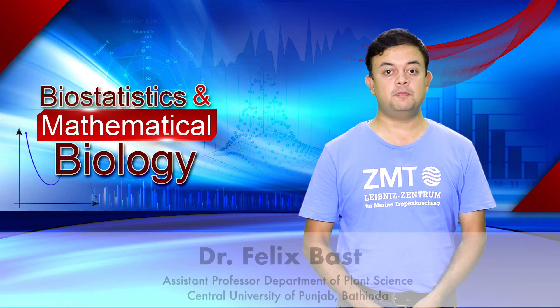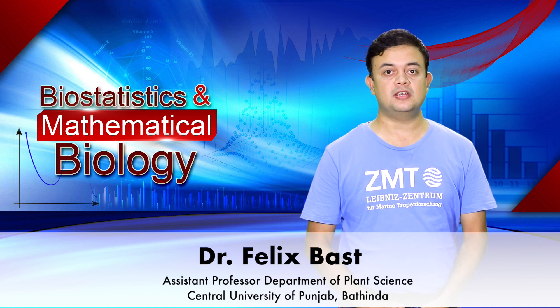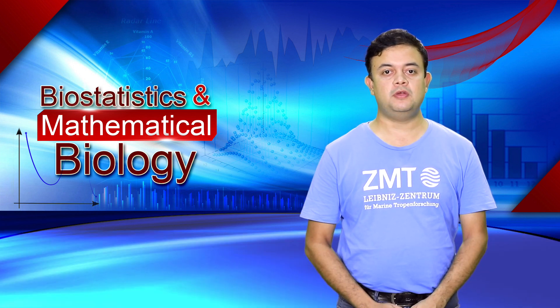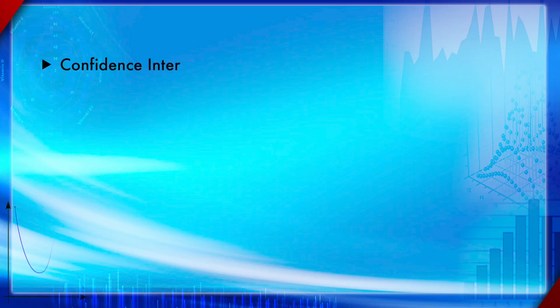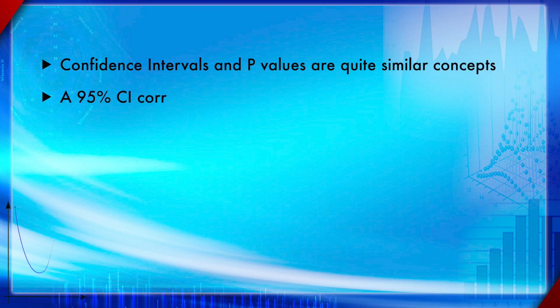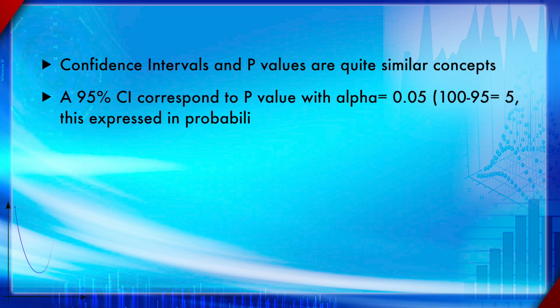Module 14A: Relationship between confidence intervals and statistical significance. Section 1: Relationship between CI and p-values. Confidence intervals and p-values are quite similar concepts. A 95% confidence interval corresponds to the p-value with alpha equal to 0.05. This is because p-values are expressed as probabilities, and 0.05 probability means 5%, which is the tail end of the bell curve — and 100 minus 95% equals 5%.